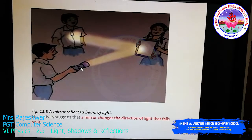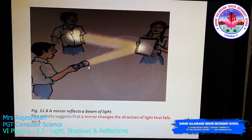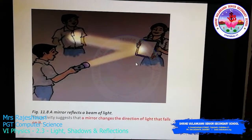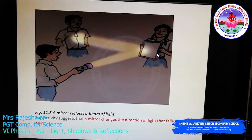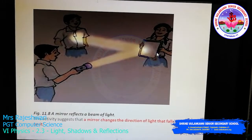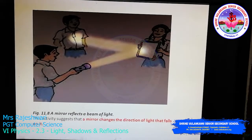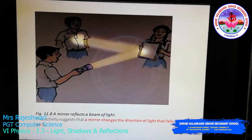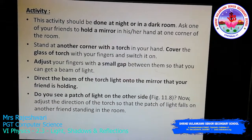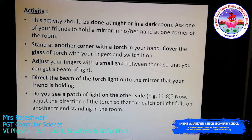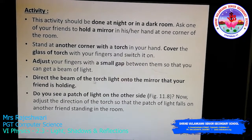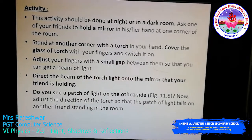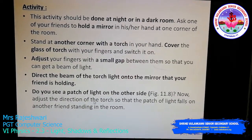When your friend switches on the torch, the beam of light will travel towards the mirror. Once the beam of light hits the mirror, you can see a patch of light formed — that is the reflection of the light. See here: if you direct the beam of torch light onto the mirror your friend is holding, you will see a patch of light on the other side.